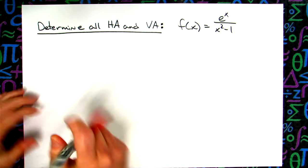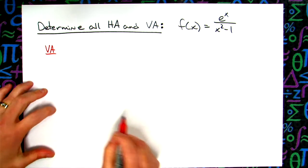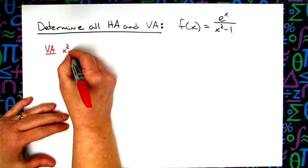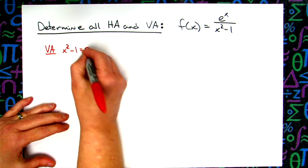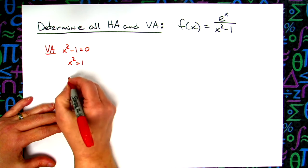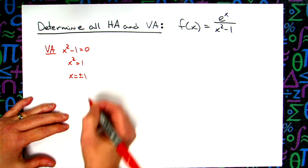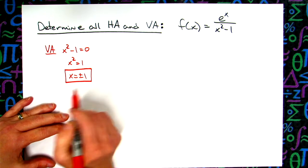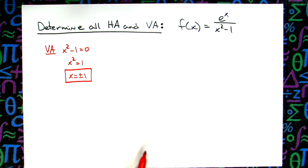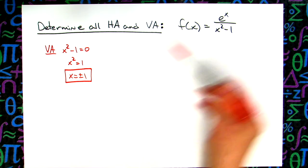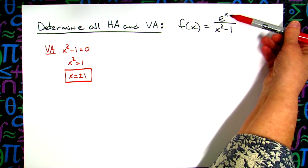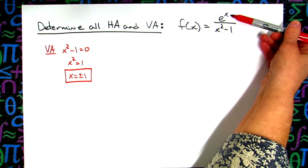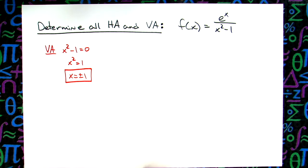For our vertical asymptotes, we'll do that first because it's the easiest. All we need to do is take the denominator and set it equal to 0. So we'll have x² - 1 = 0, x² = 1, and then x = ±1 taking the square root of both sides. Finding vertical asymptotes of a rational function is easy — you should always plug that value into the numerator and make sure it doesn't equal 0, which it doesn't here. So those are the two vertical asymptotes.